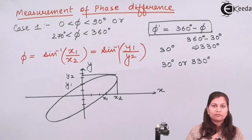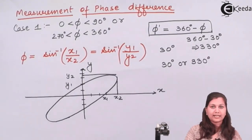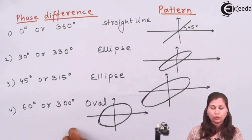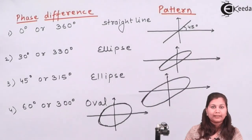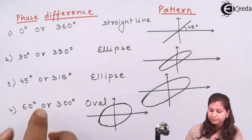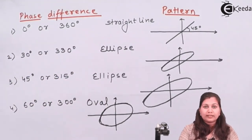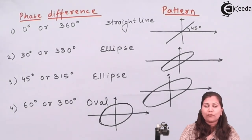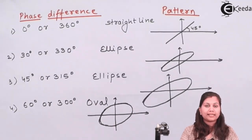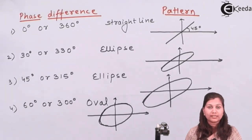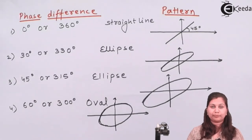The standard Lissajous patterns can be remembered: for standard phase values, if we get a straight line, ellipse, or oval with equal minor and major axes, these correspond to specific phase difference values. In this video, we studied the measurement of phase difference using the cathode ray oscilloscope — how Lissajous patterns can be used to find the phase difference between two sinusoidal voltages of the same frequency. I hope this topic is now clear to you. Thank you.